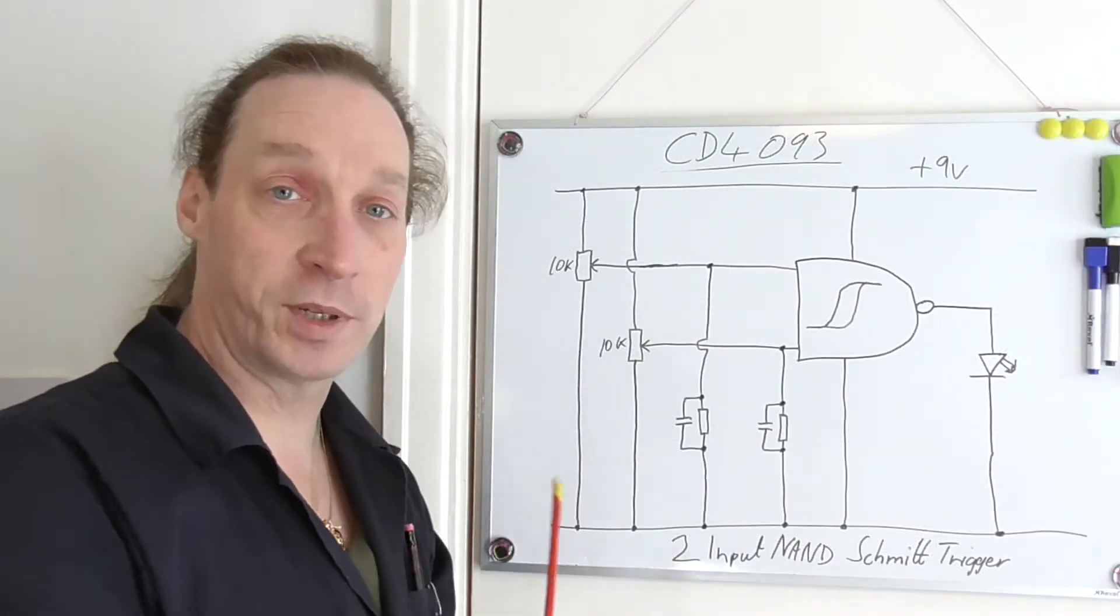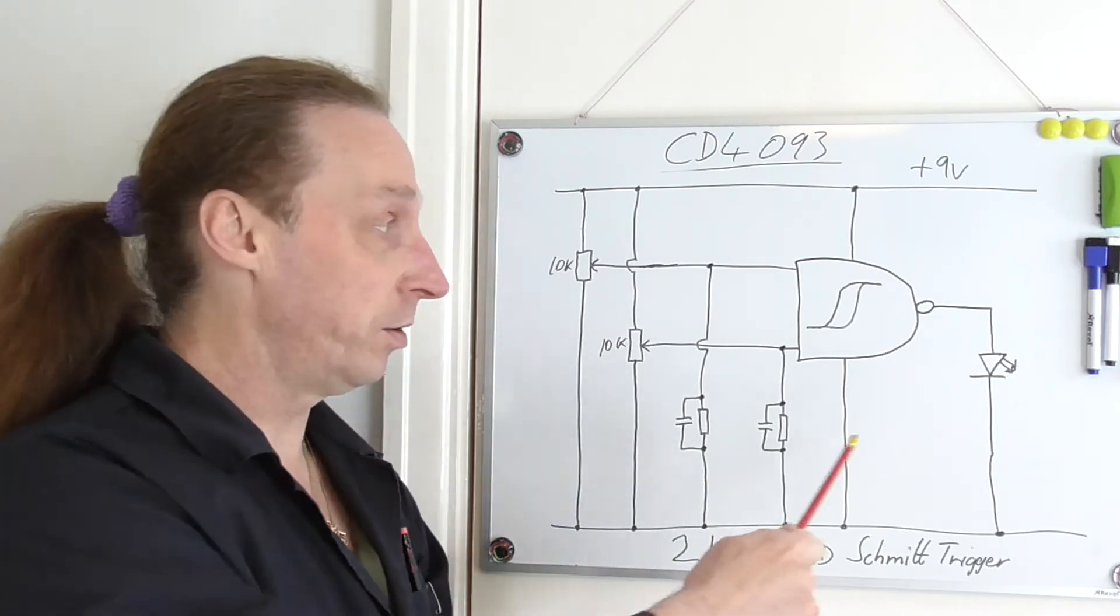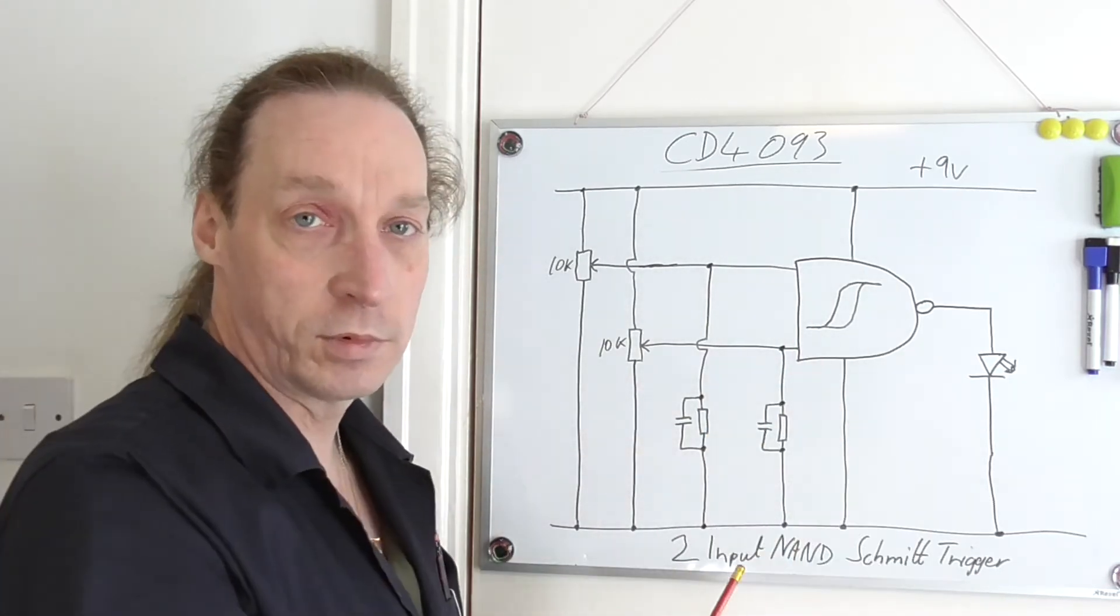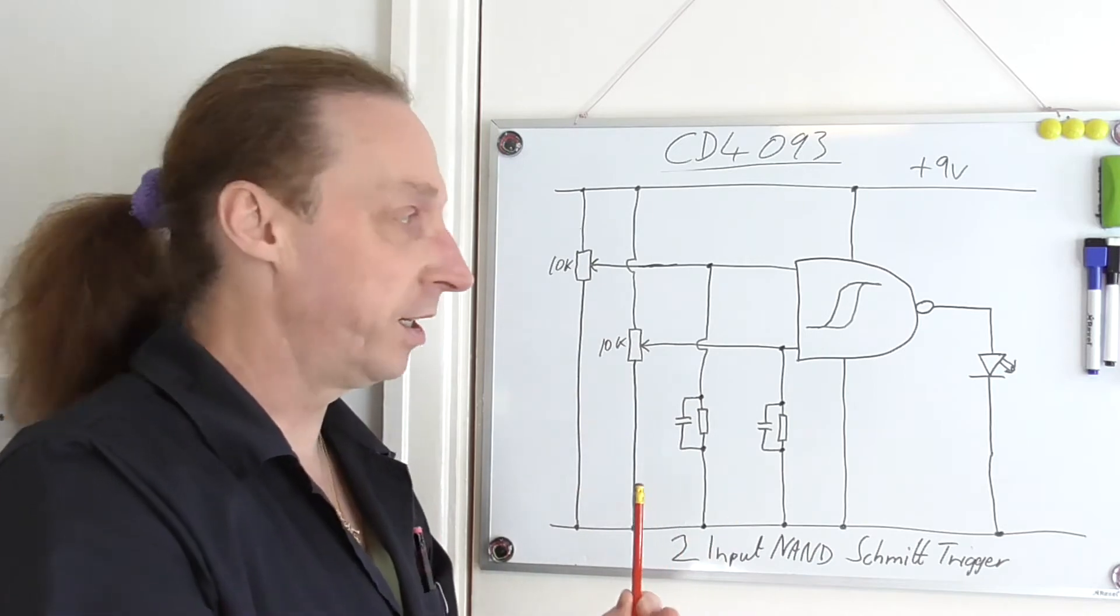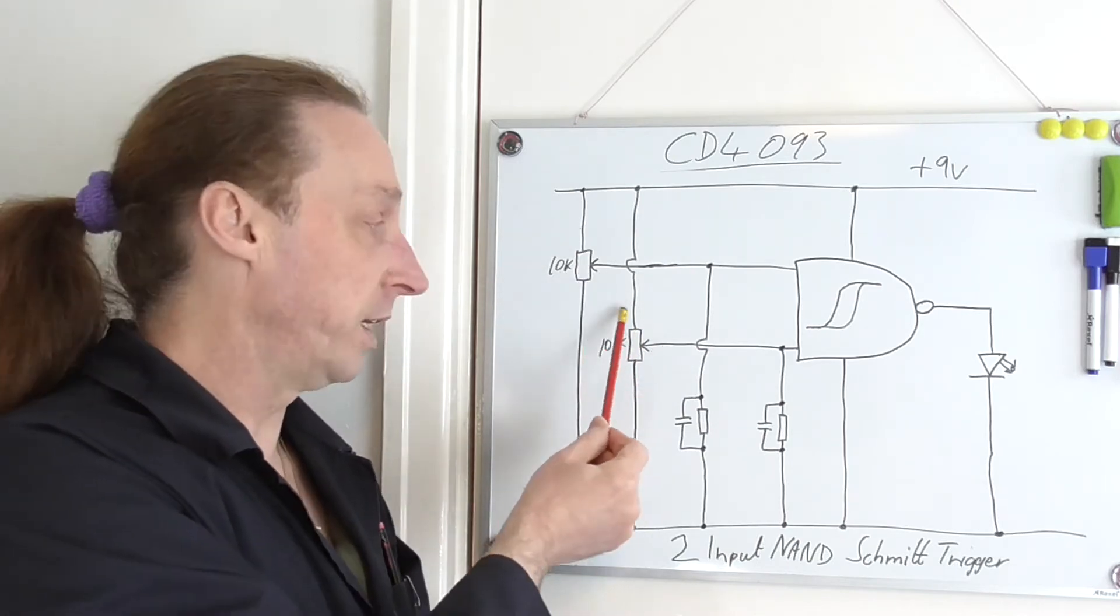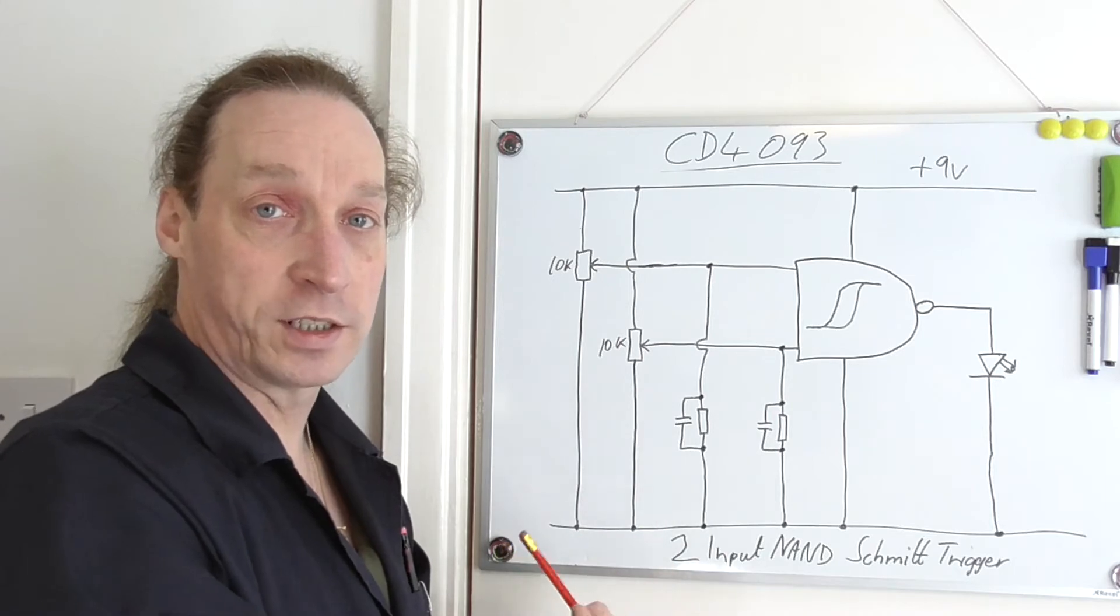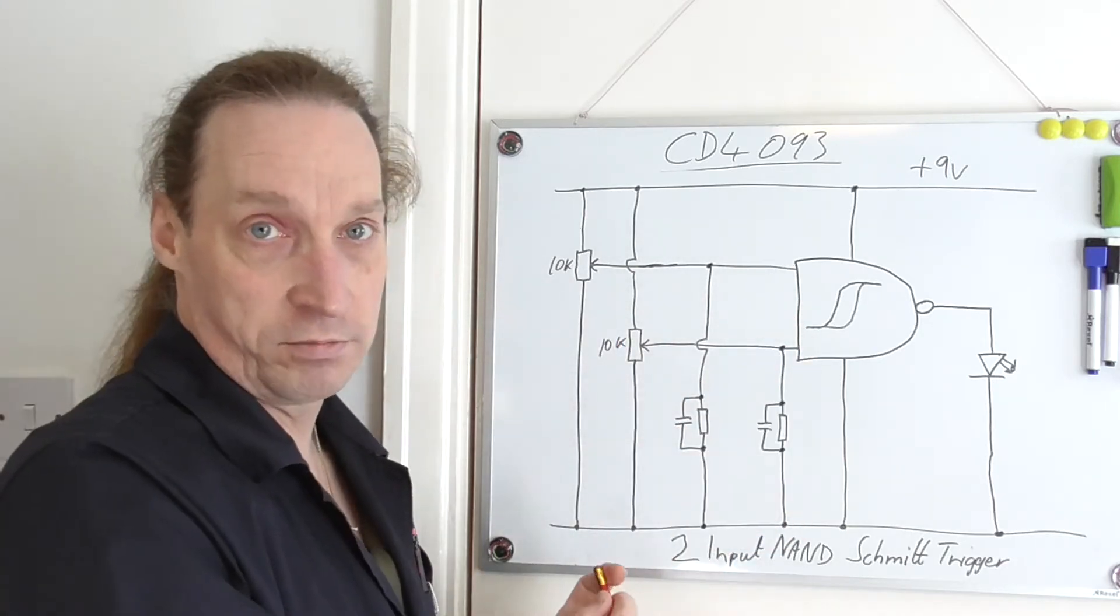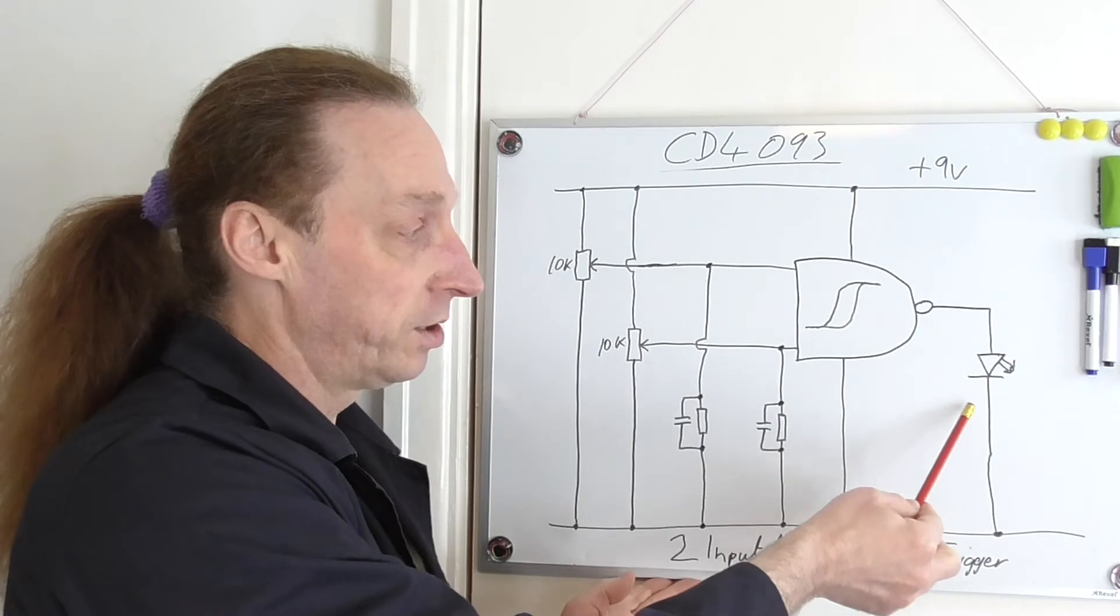So this is the actual circuit I'm going to be using to test out the two-input NAND Schmidt trigger IC, or at least one of those because there's four on an IC. I've got the actual logic gate itself with the little Schmidt trigger symbol in there, two inputs. The inputs are basically from two pots and I'm going to put multimeters across the pots so we can see the voltage go up and down. Both inputs have to be effectively high for this to go off because, being a NAND gate, when there's no inputs this will be giving an output.